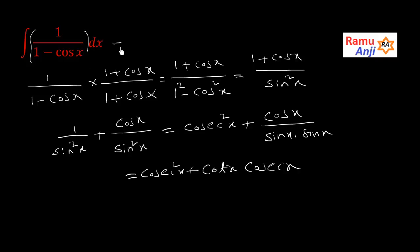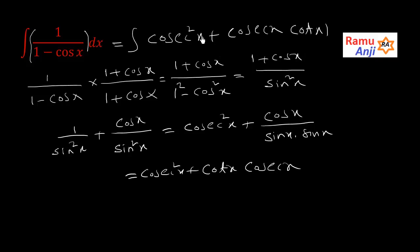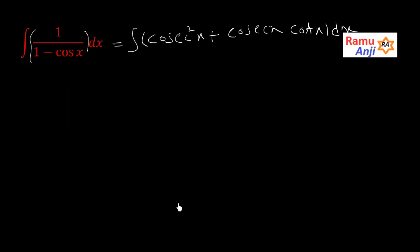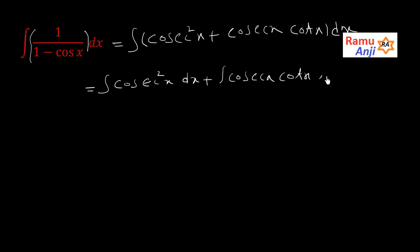That is equal to the integral of cosecant²x + cot x · cosecant x dx. Now we write the integral separately: the integral of cosecant²x dx plus the integral of cosecant x · cot x dx.